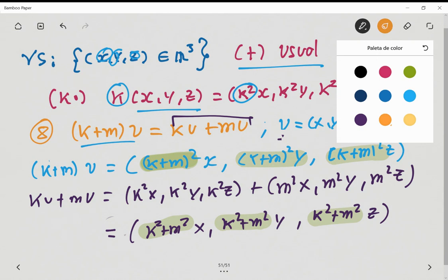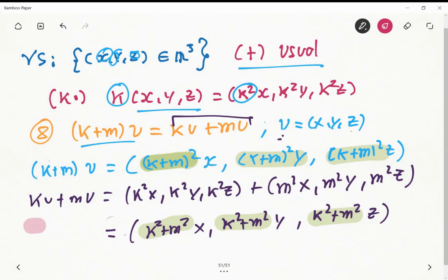So here we got a contradiction, basically, and it says that the axiom of this vector space is not satisfied. That means that immediately VS is not a vector space.